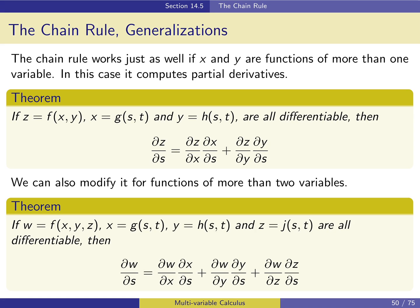We can also modify the chain rule to deal with functions of more than two variables. If w is a function of x, y, and z, then when we compute the partial derivative of w with respect to s or t, we use the full differential, which will have a dx term, a dy term, and a dz term. You can generalize this to as many variables as you want — you should be able to see the pattern.